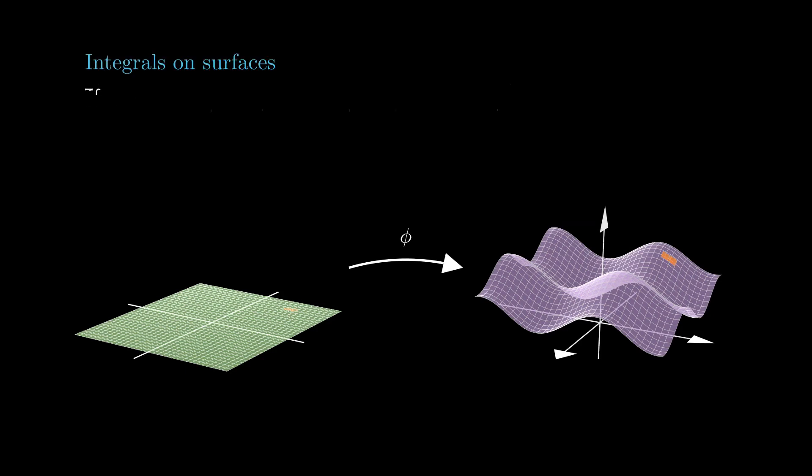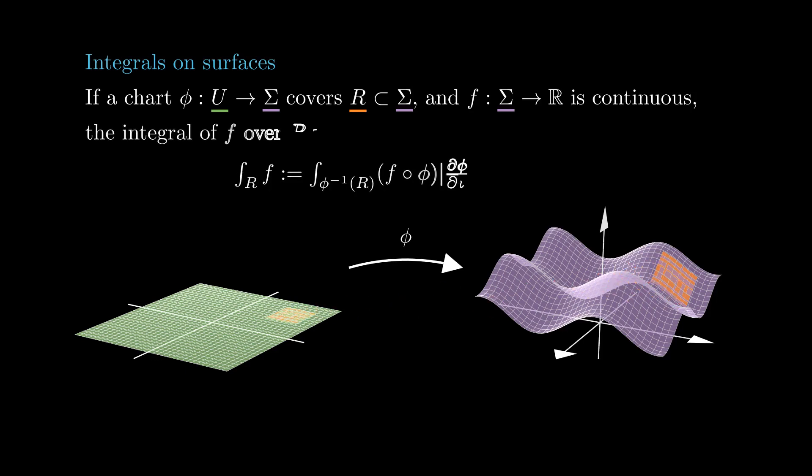We can similarly define integrals. If a region r is covered by a parametrization phi, the integral of a continuous function f over the region r is defined to be the integral over the preimage of r in r2 of the function f composed with phi multiplied by the Jacobian of the parametrization.